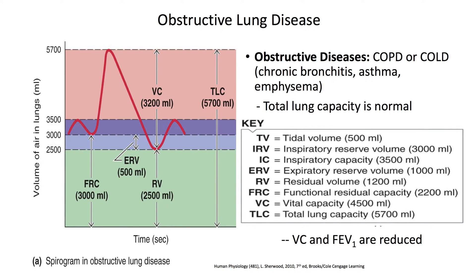We should start by highlighting things that are normal. One characteristic is that the total lung capacity does not change in an obstructive lung disease. The total lung capacity refers to how much air you can get inside when you inhale as hard as you can. That number is 5,700 — inside a diseased lung and also inside a normal lung. The numbers in the key represent a normal lung; the numbers in the chart represent a diseased lung. You'll notice that number is also 5,700 in the diseased lung.